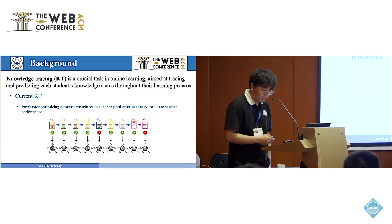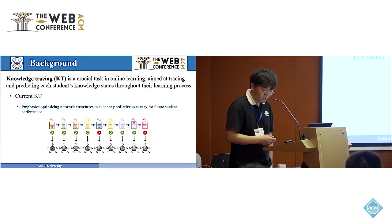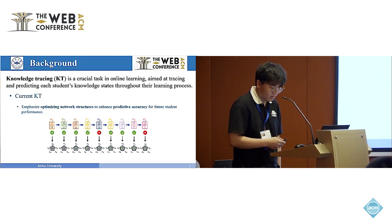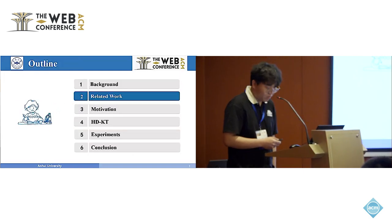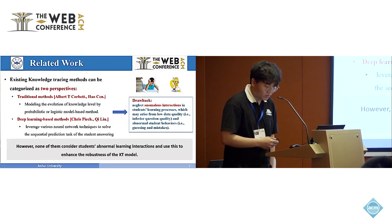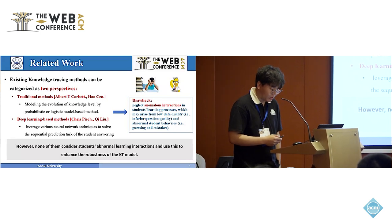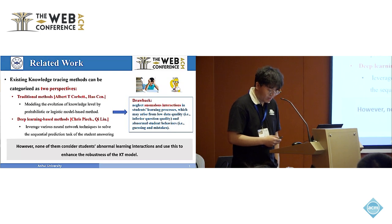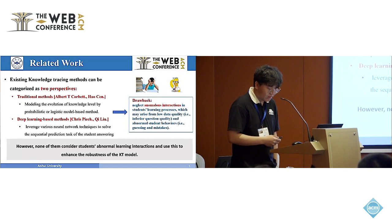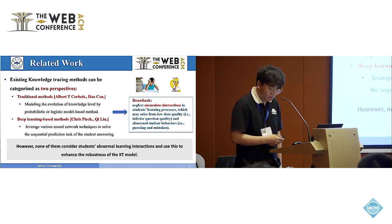Most current KT methodologies emphasize optimizing network structures to enhance predictive accuracy for future student performance. One branch models the evolution of knowledge levels through probabilistic and logistic models. Meanwhile, a large number of deep learning based methods utilize various neural network technologies to model students' knowledge states and predict the sequence of students' answers.